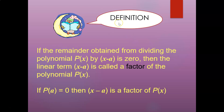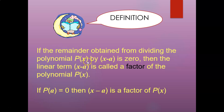Let's see the definition first. If the remainder obtained from dividing the polynomial P(x) by x minus a is zero, then the linear term x minus a is called a factor of the polynomial. So what does that mean? A factor is when we have a polynomial P(x), and when we divide it — using long division or by substitution — if the remainder we get is zero, then x minus a is the factor.